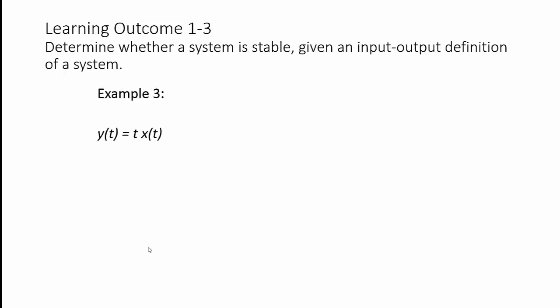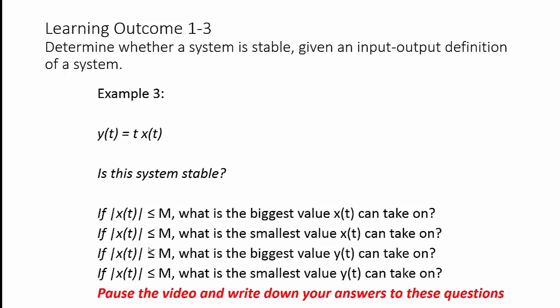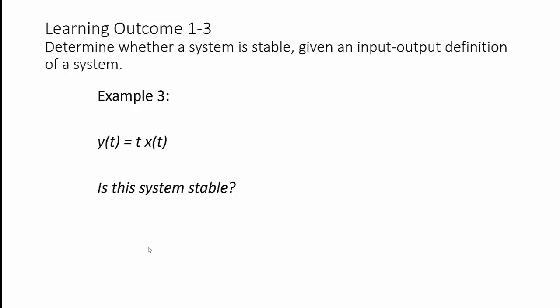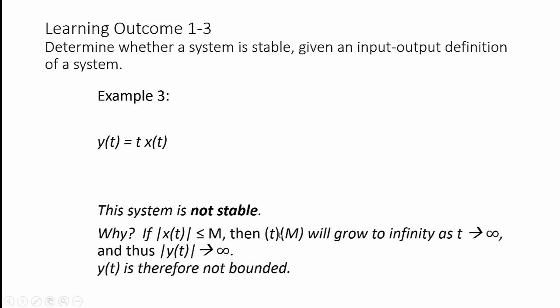A third example: y(t) = t·x(t). Is this system stable? Think of those four questions — the first two you know, but think carefully about the last two. Pause the video and write down your answers. This system is not stable. Even if x(t) is bounded by m, the factor t·m is going to grow to infinity as t goes to infinity. Even though x(t) is bounded by m, the whole quantity goes to infinity. Thus, y(t) will go to infinity or negative infinity — y is not bounded, and the system is not stable.